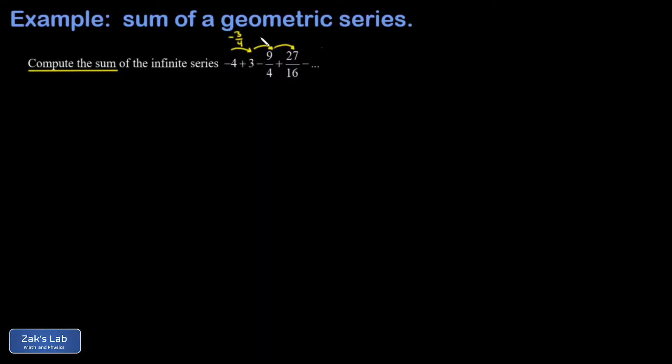And then I check: if I multiply 3 by negative 3 fourths, what do I get? That is negative 9 fourths. So it's still working. And to be extra careful, we could check the next term. If I multiply negative 9 fourths by negative 3 fourths, I get a positive. 3 times 9 is 27 in the numerator and 4 times 4 is 16 in the denominator. So it's still working.